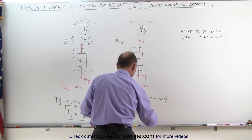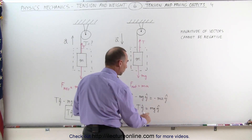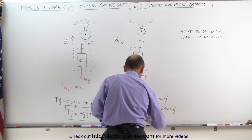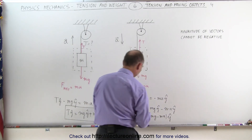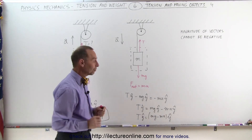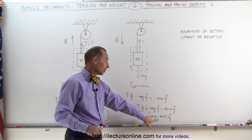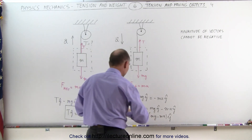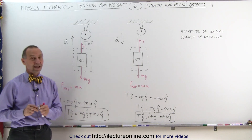Solving for T, we can say that T in the y-direction equals mg in the y-direction — moving it to the right side of the equal sign makes it positive — minus ma in the y-direction. So the tension in the y-direction equals the quantity mg minus ma. All the magnitudes of vectors are positive, but the negative sign indicates a negative quantity, meaning the tension of an object accelerating downward equals the weight of the object minus the force required to accelerate it downward. And that's how we find these quantities in vector format using free body diagrams.